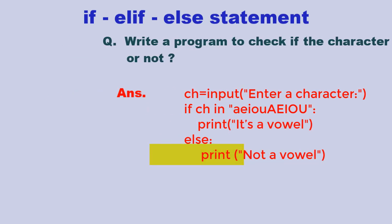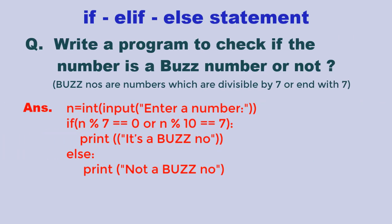Another question could be to write a program to find if a number is buzz number or not. Buzz numbers are numbers which are divisible by 7 or end with 7. Here you will first take in an integer value from the user and then write two expressions: first to check if n is divisible by 7 by using the modulus operator.